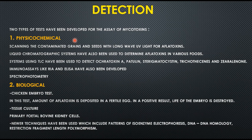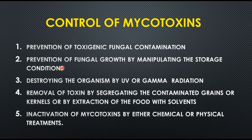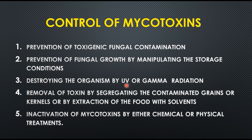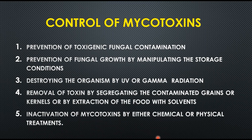To control mycotoxins in food, the following approaches are used: prevention of toxigenic fungal contamination; prevention of fungal growth by manipulating storage conditions such as temperature; destroying organisms using UV or gamma radiation; removal of toxins by segregating contaminated grains or kernels or by solvent extraction; and inactivation of mycotoxins by chemical or physical treatment. This concludes Part 1; Part 2 will discuss the types of mycotoxins in detail.